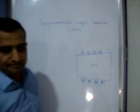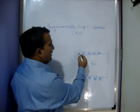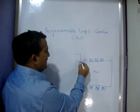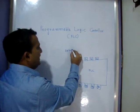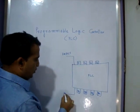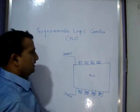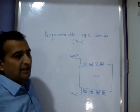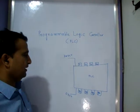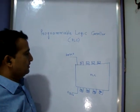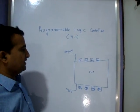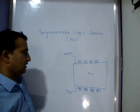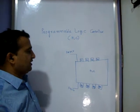Inside the PLC there is a memory — this is called the input module and this is called the output module. The PLC requires 24 volt DC and 0 volt. This PLC can connect to a PC, or we can directly connect it to machines. First of all we will study the programs and the basics of PLC.